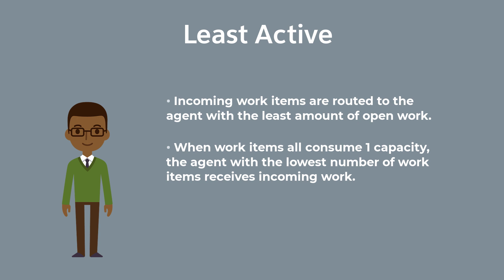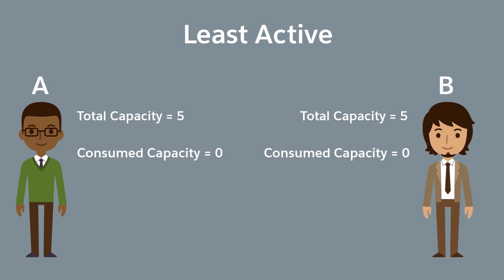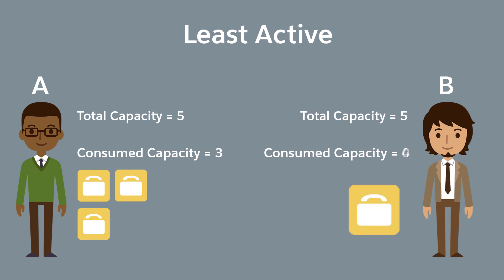Let's look at an example scenario where agents have work with varying capacity impacts. Here are two agents, Agent A and Agent B. Each agent has an overall capacity of 5. Agent A has three active work items, each with a capacity impact of 1, so a total capacity of 3. Agent B has one active work item with a capacity impact of 4, so a total of 4. Because Agent A has a lower capacity impact than Agent B, incoming work items are routed to Agent A.